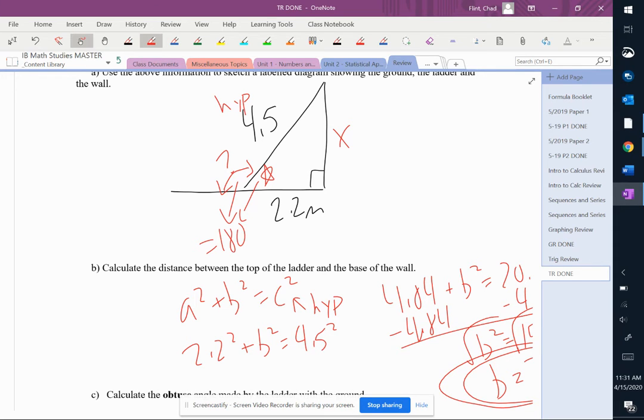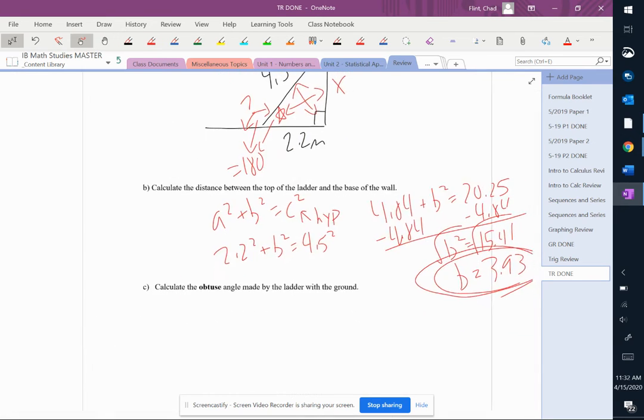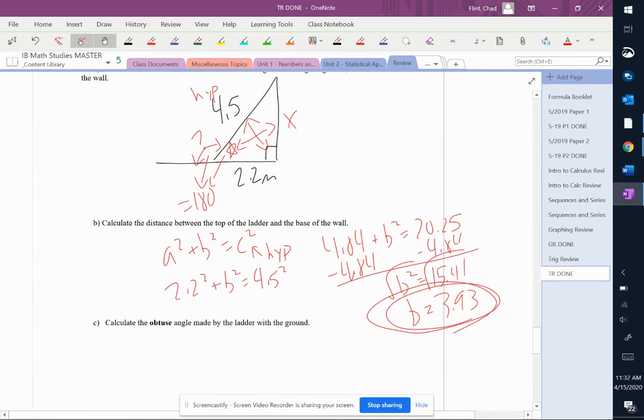So we're going to find this angle using law of sines because now we know that angle and the side. We have the 90 degree angle and the 4.5 that are across from each other. We're going to find that angle with the side across from it. So we're going to use law of sines to do this.